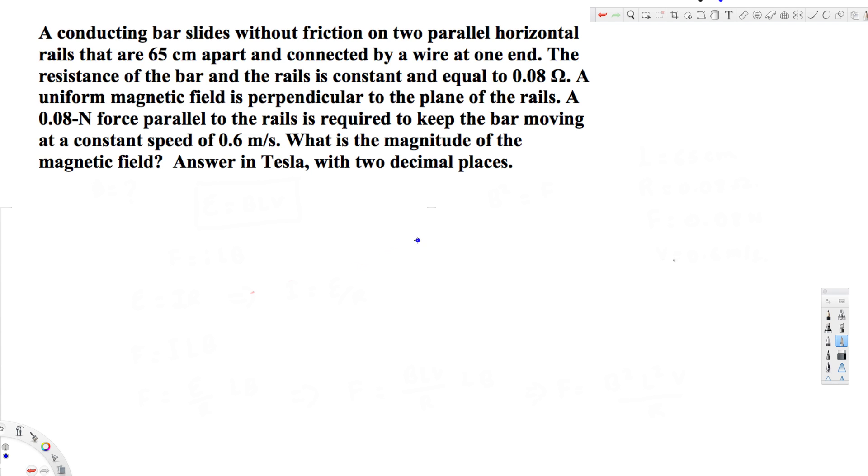What's going on guys, let's look at this problem. The question is asking: a conducting bar slides without friction on two parallel horizontal rails that are 65 centimeters apart and connected by a wire at one end. The resistance of the bar and the rails is constant and equal to 0.08 ohms. A uniform magnetic field is perpendicular to the plane of the rails.